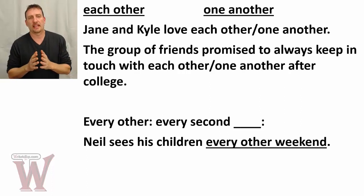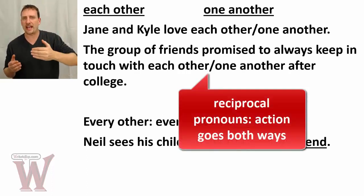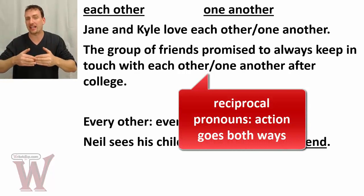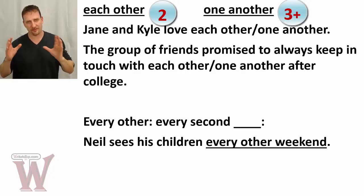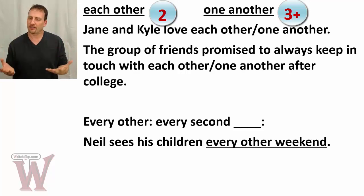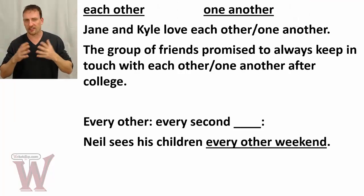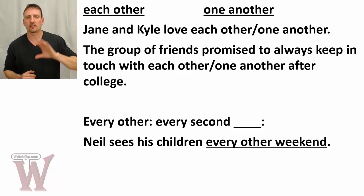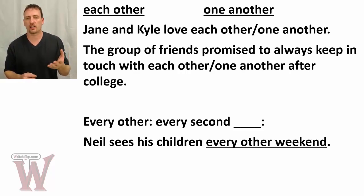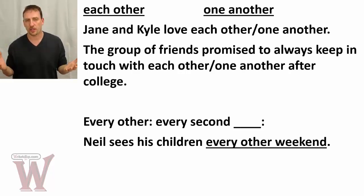Let's talk about "each other" and "one another." These are reciprocal pronouns: you do one action to a person and they do the action back equally. Technically, "each other" is for two people and "one another" is for three or more. These days, people mix them up and nobody will notice the difference. But if you want to be correct: each other for two, one another for three or more. "Jane and Kai love each other." "The group of friends promise to always keep in touch with one another after college."